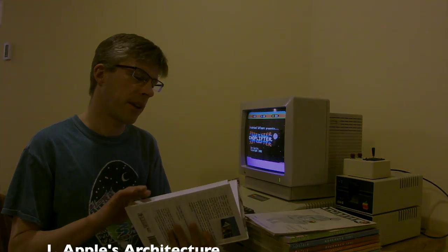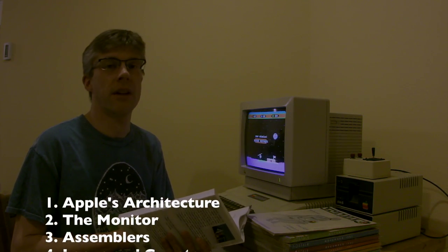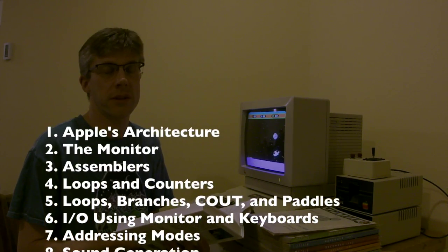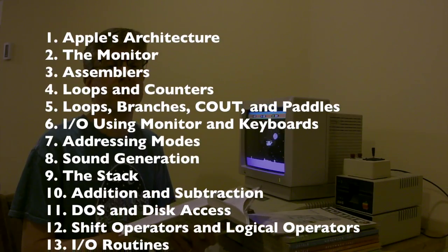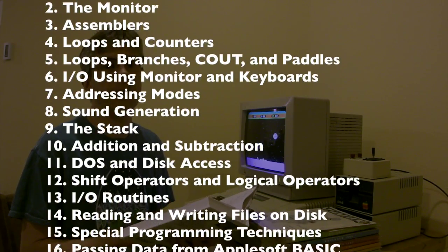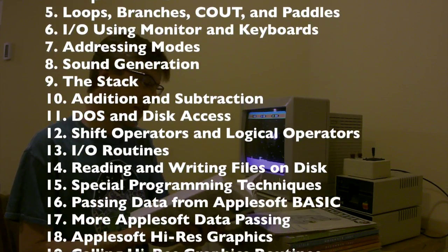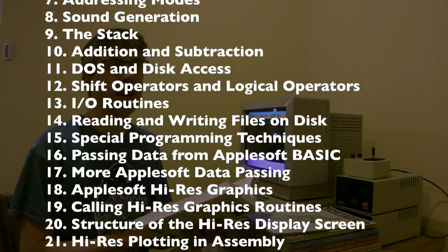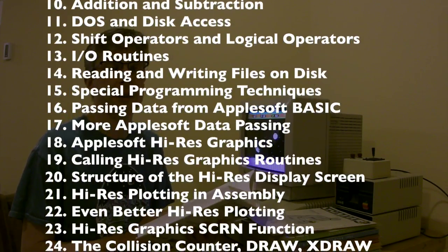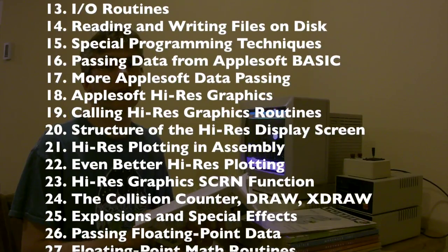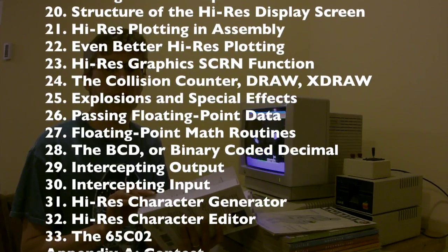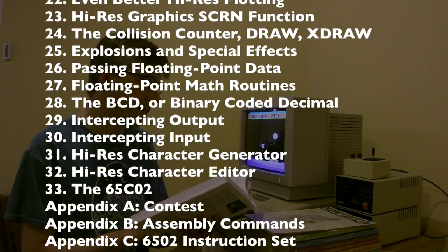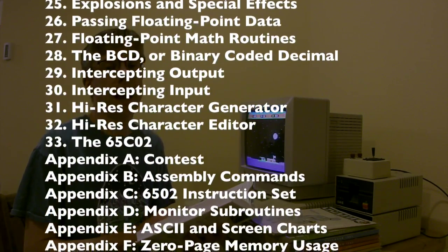So what's in the book? If you look in the table of contents, you can see that the book starts out with basic 6502 instructions — things like loops, jumps, and how to use simple subroutines in the Apple II monitor. Then the book goes on to describe more advanced topics, like generating sound, or how to use Apple's high-resolution graphics. It also talks about how to do things like self-modifying code, and finally, it talks about how to handle input and output.